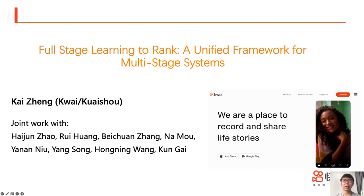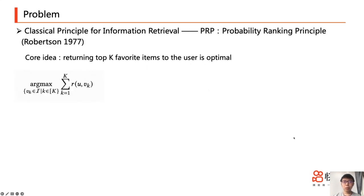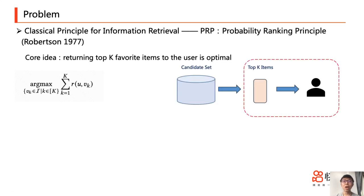This is a joint work with my collaborators. We have identified a significant problem in the realm of information retrieval: the application and limitations of the Probability Ranking Principle. Traditionally, retrieval and ranking models have been designed based on PRP — learning users' ground truth interest function and presenting top-k items that align with this function. While Robertson validated its optimality, there exists an underlying assumption that these top-k items can be directly presented to users.